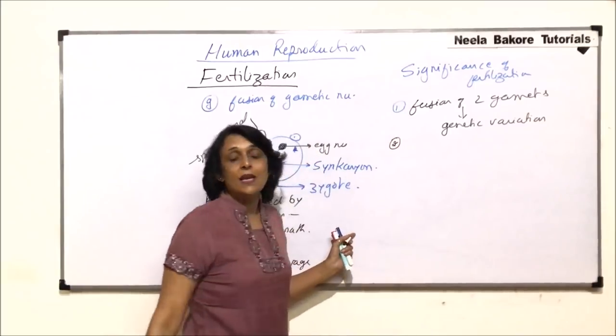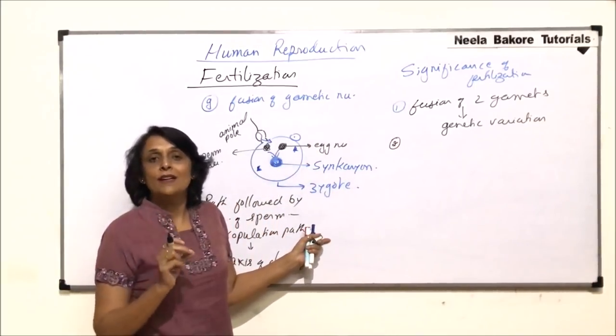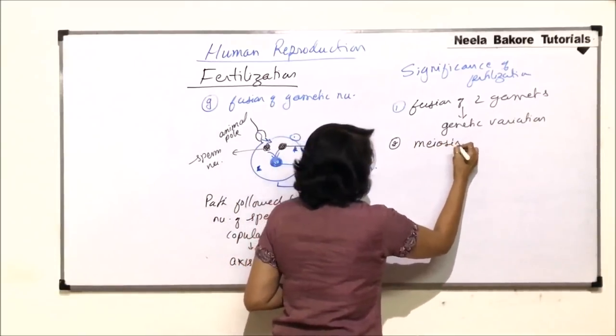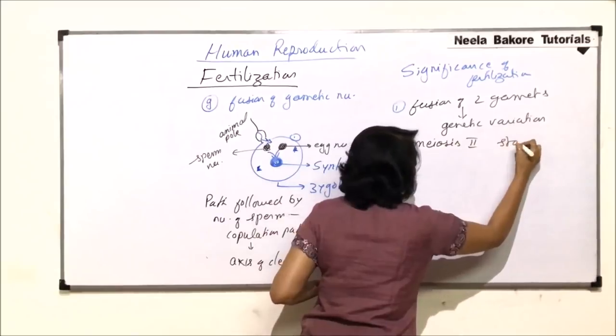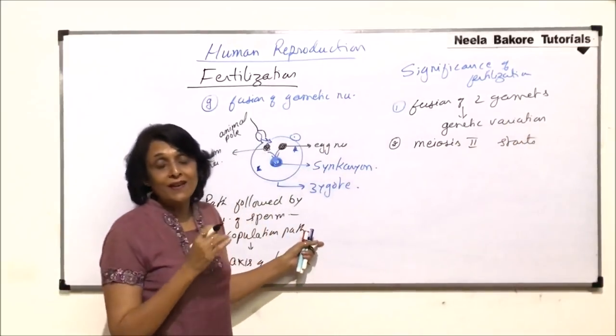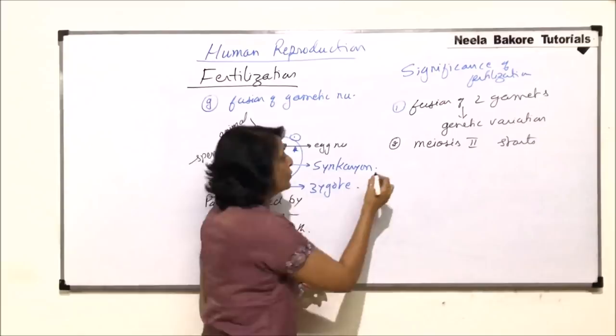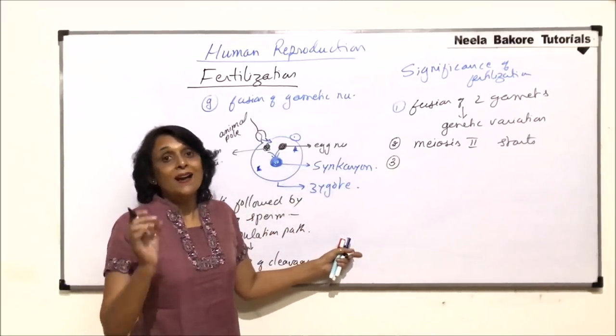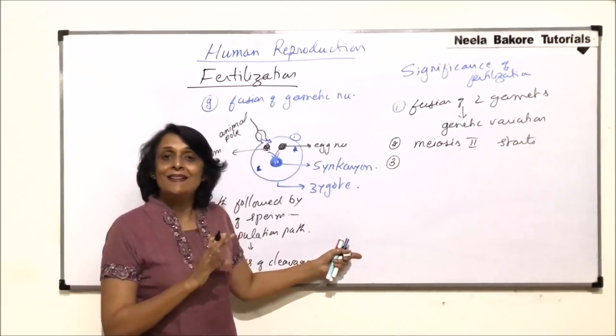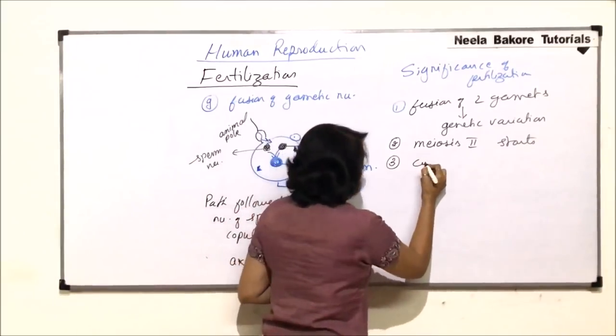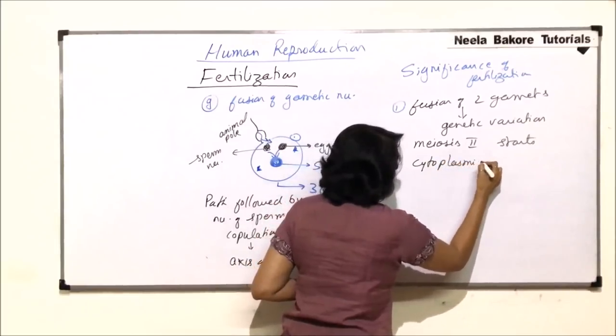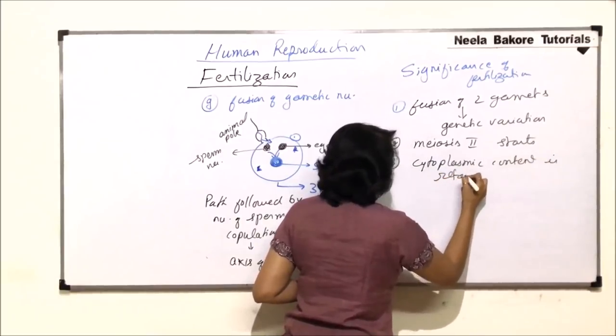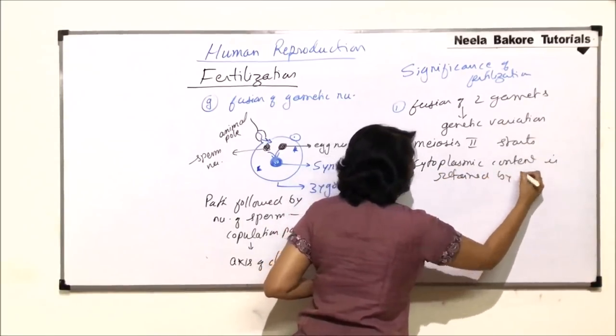Another importance is as soon as the sperm comes in contact with the egg, meiosis 2 starts. That is also a step when the sperm comes in contact with the egg. Third thing, during meiosis, complete cytoplasmic content is retained by the egg.